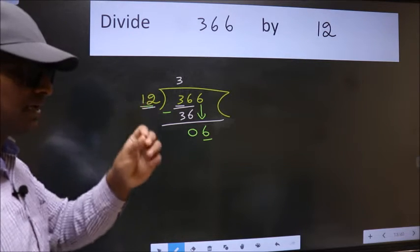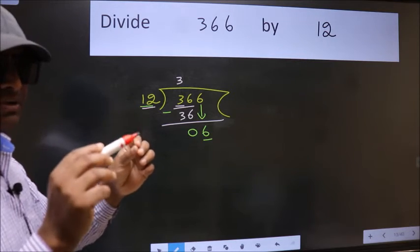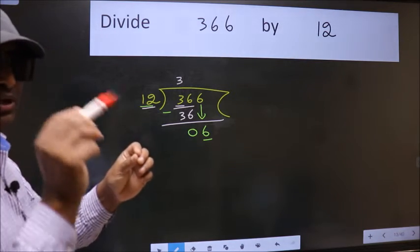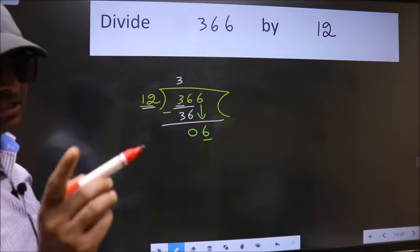I repeat: bring down the number and also put dot, take 0. Bring down the number and put dot, take 0, both at the same step. You should not do.